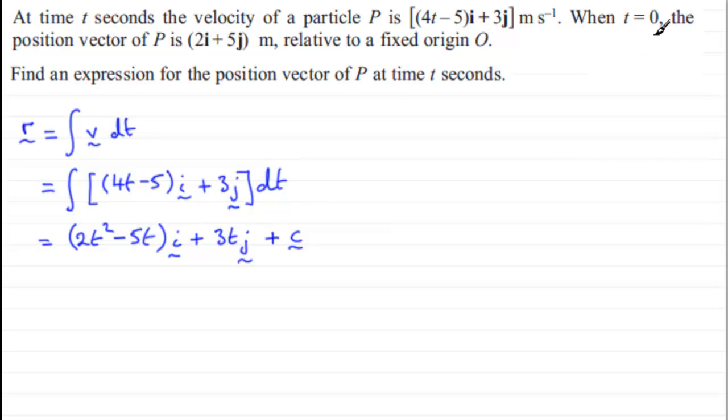And we know that when t equals 0, the position vector of P is given by 2i plus 5j. So we can say that when t equals 0, we've got that the position vector r equals 2i plus 5j. And if we call this equation 1, we can use this result, we can sub this into that equation to work out what c is.